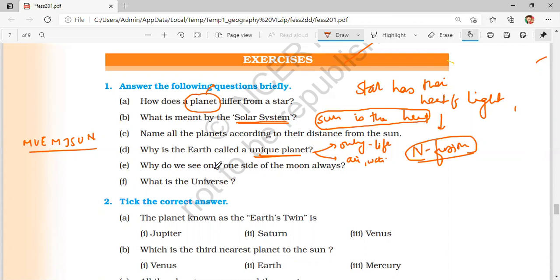Why do we see only one side of the moon always? Very simple question. The duration of its rotation around its axis and the time taken by it to complete one revolution around the Earth is both 27 days, so we can't see the farther side of the moon.